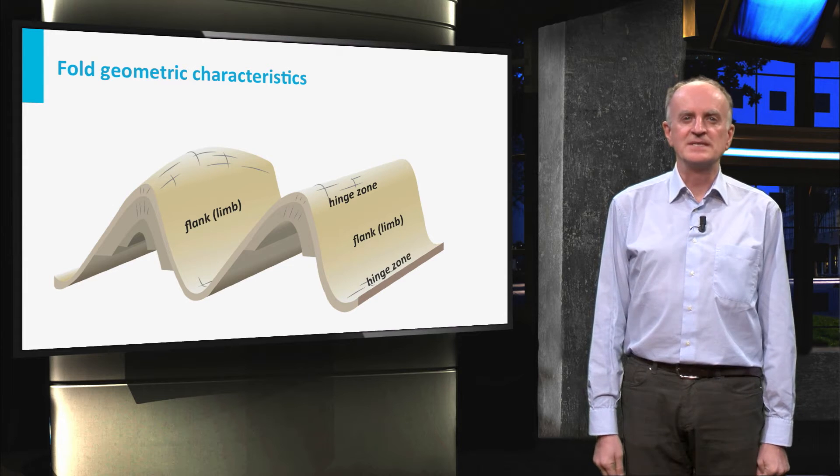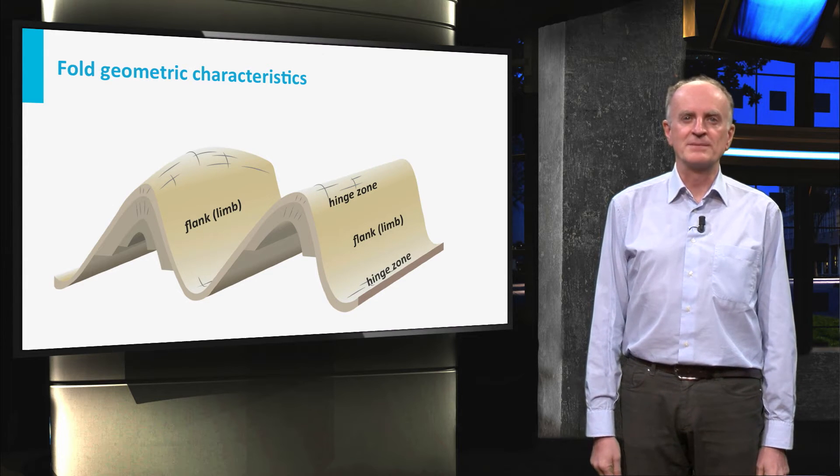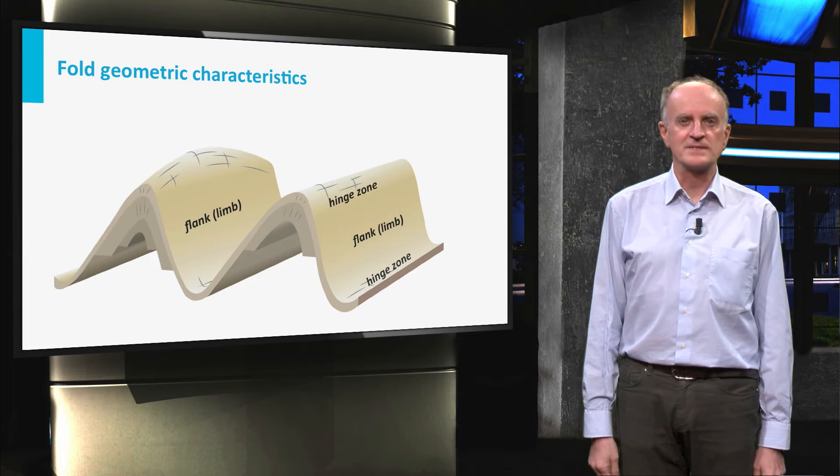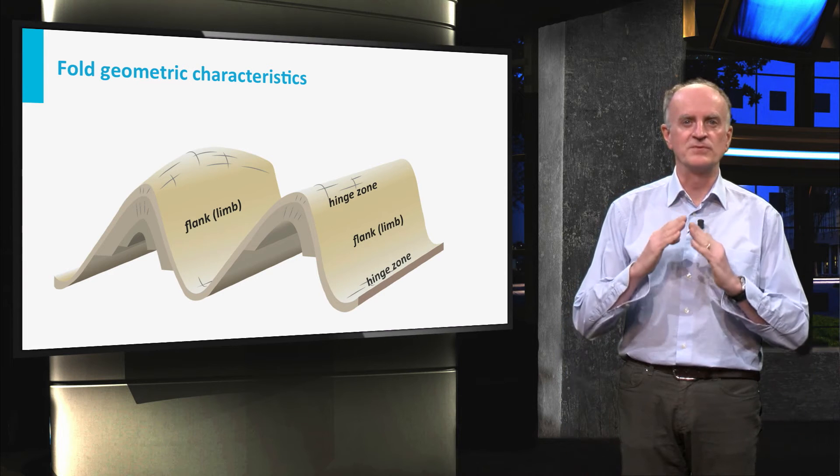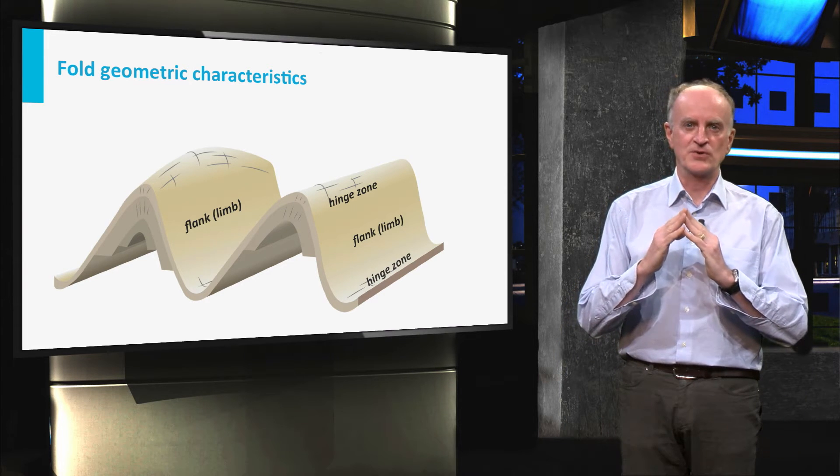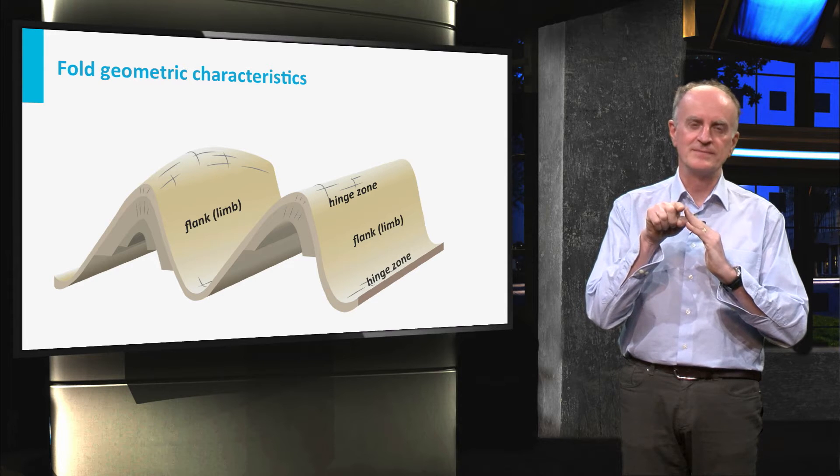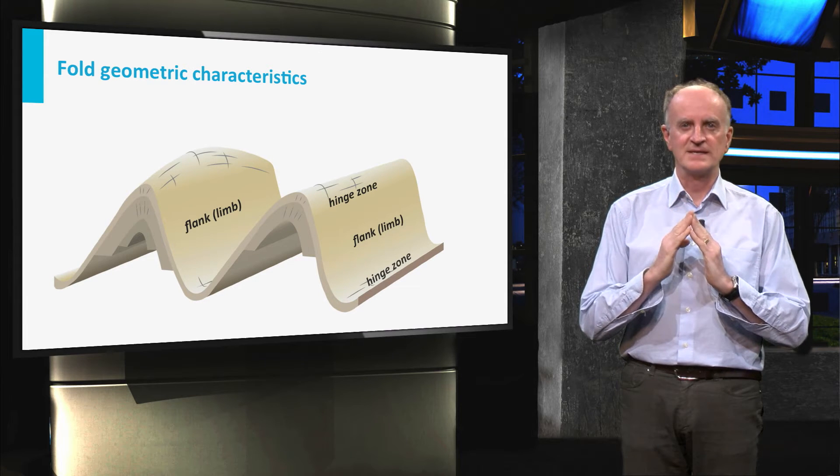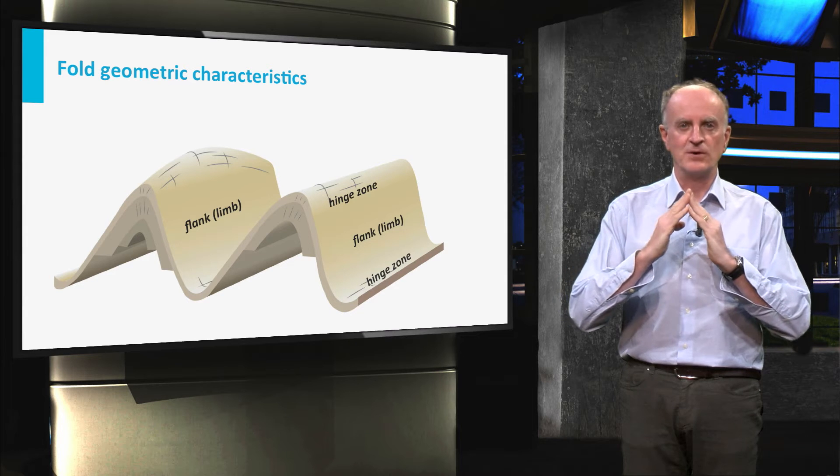In the slide you can see the most important geometric parameters used to characterize folds. A fold is composed of two flanks or limbs which are connected by its hinge zone. Depending on the angle between the flanks, the fold can be more or less open.